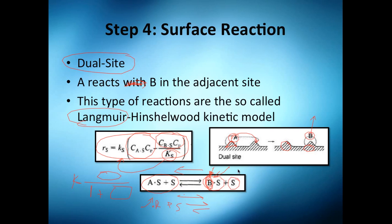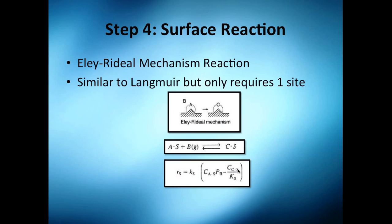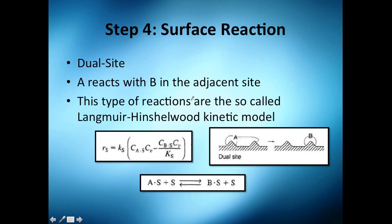Finally, it's also very common to have Eley-Rideal mechanism reaction, which is similar to that of Langmuir but it only requires one site. So A comes here, B is going to be in gas form, and this is pretty important.